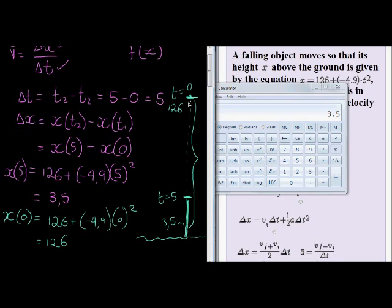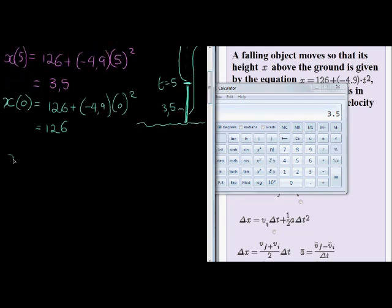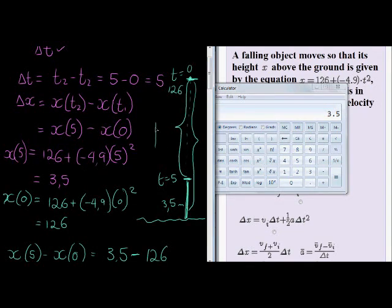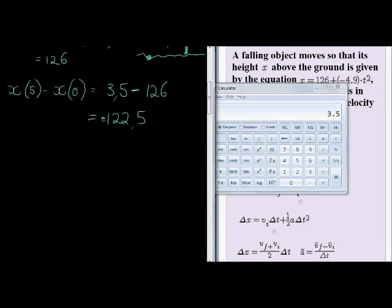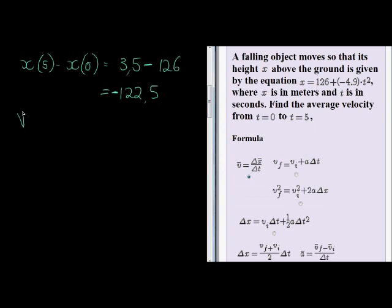So how far did it fall? That's what we get when we take x(5) minus x(0). We get 3.5 minus 126 = -122.5. Now why do we get a negative answer? That is because upwards was initially positive. Since it's falling downwards, we're going in the opposite direction and vectors in the opposite direction have the opposite signs. Vectors have direction.